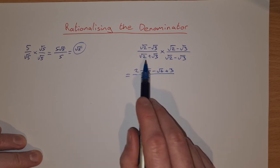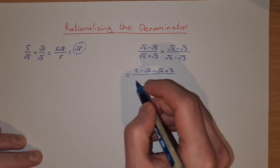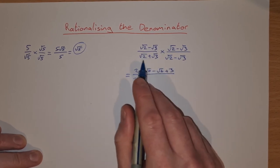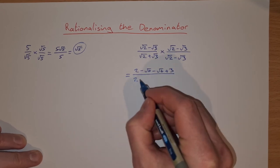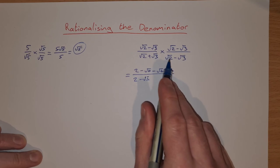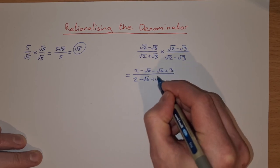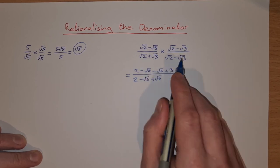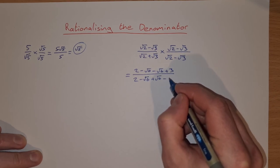On the bottom then, root 2 by root 2 is 2, plus root 3 by root 2 is plus root 6, and root 3 by minus root 3 is minus 3.